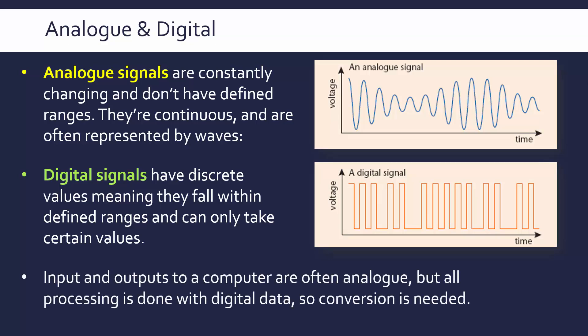This is relevant to us as computer scientists because inputs and outputs to a computer are often analog, but in a computer all processing is done with digital data, namely in binary. We need to have all data converted to binary to be able to do anything with it, and so you must convert it from analog to digital to use it in a computer.